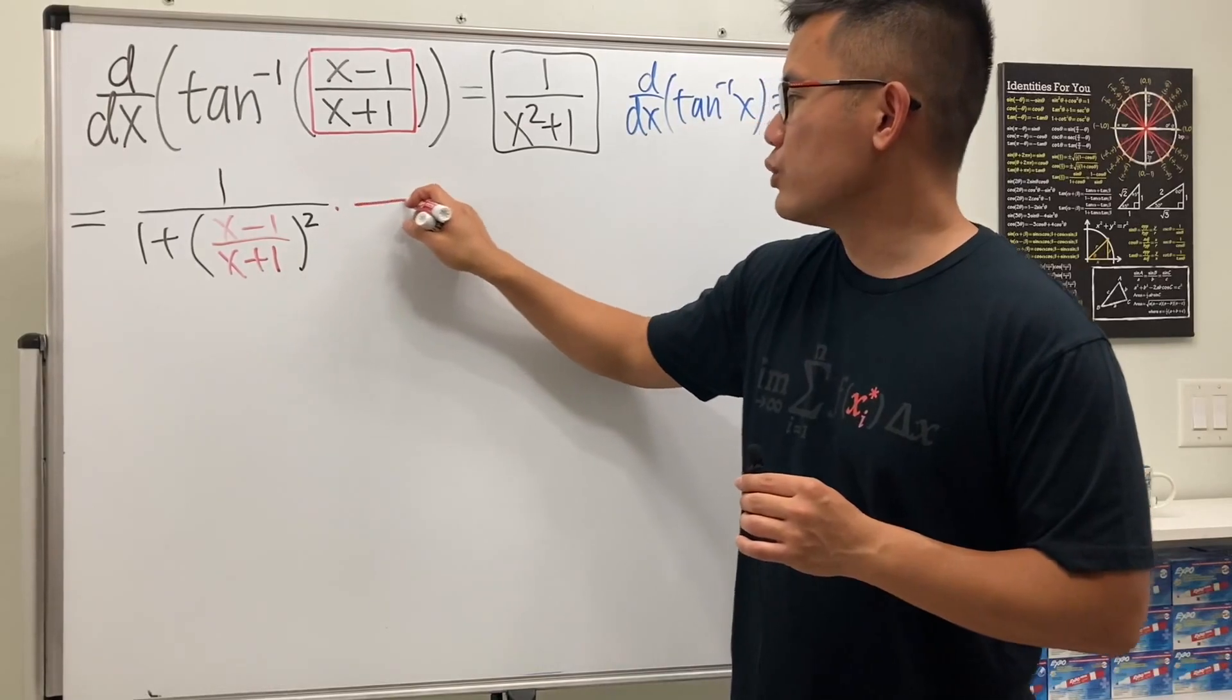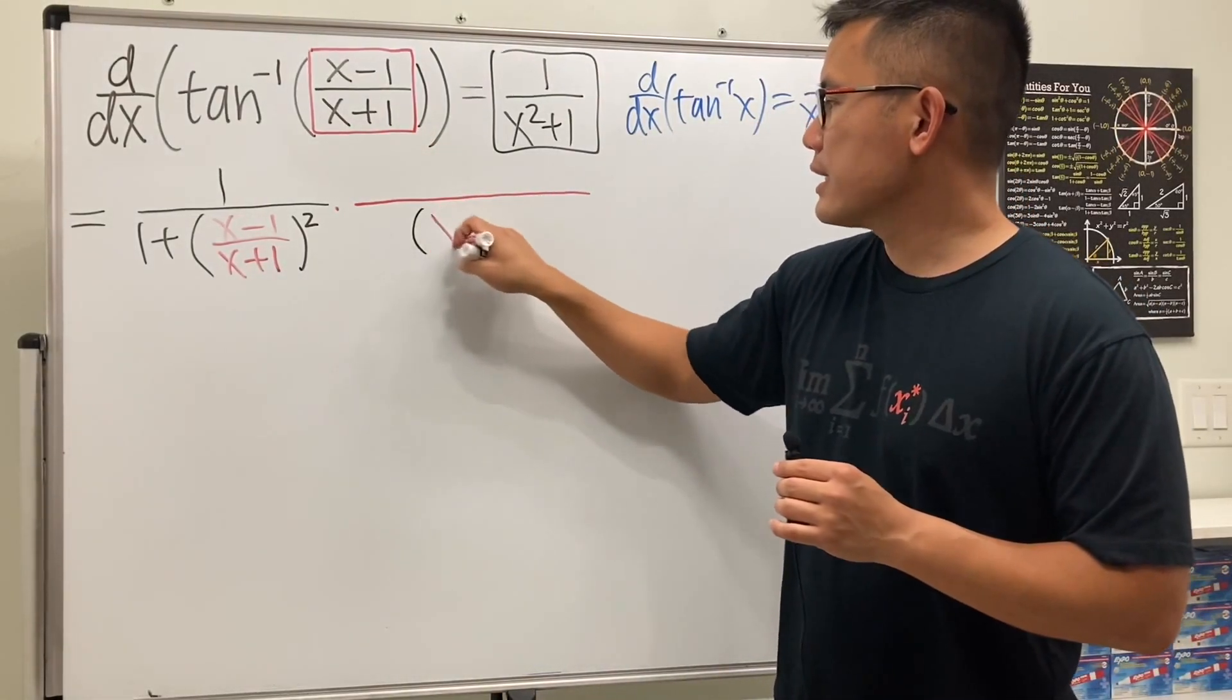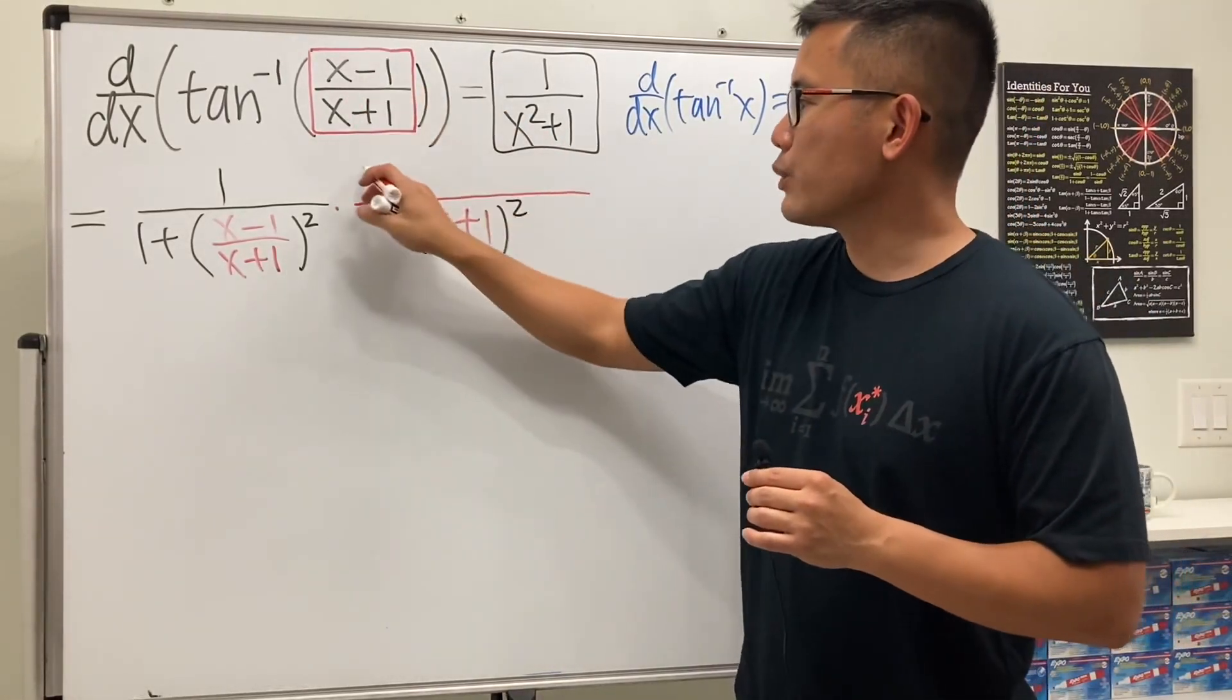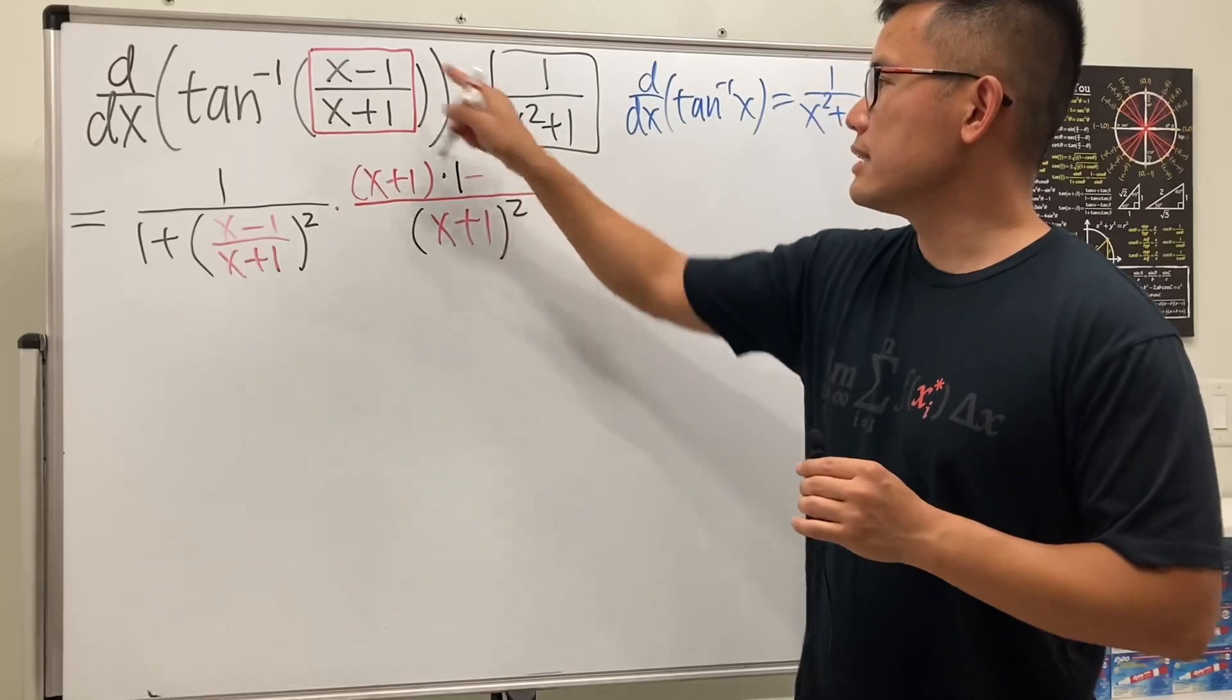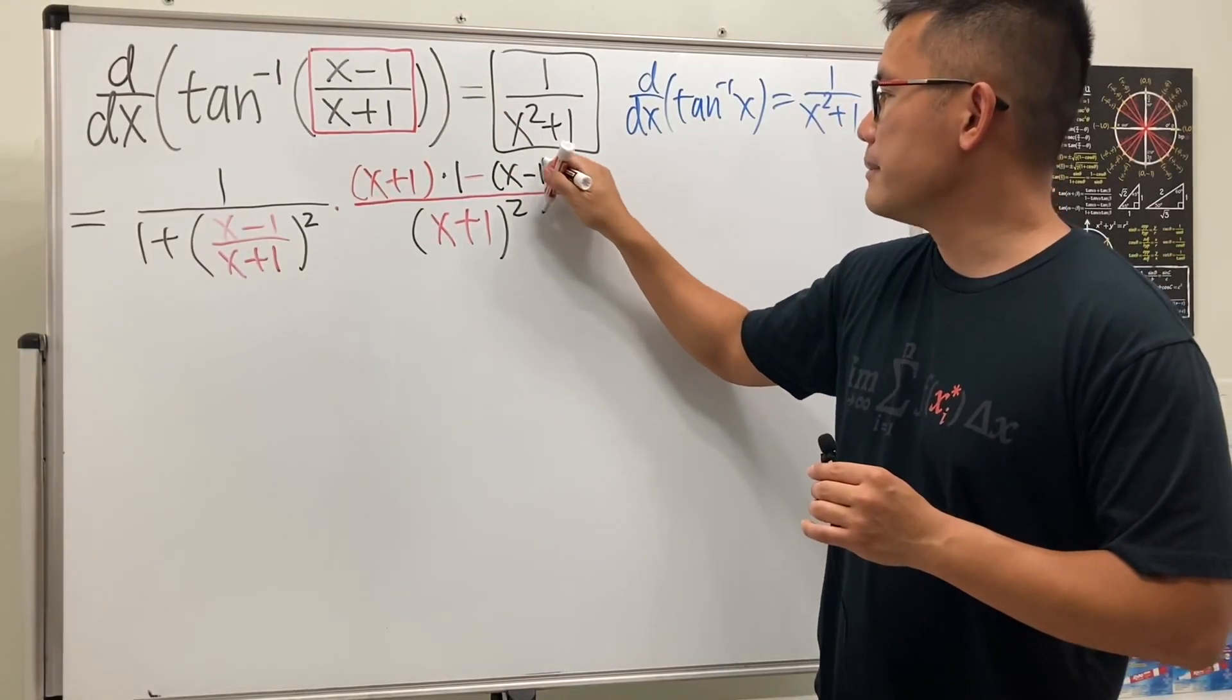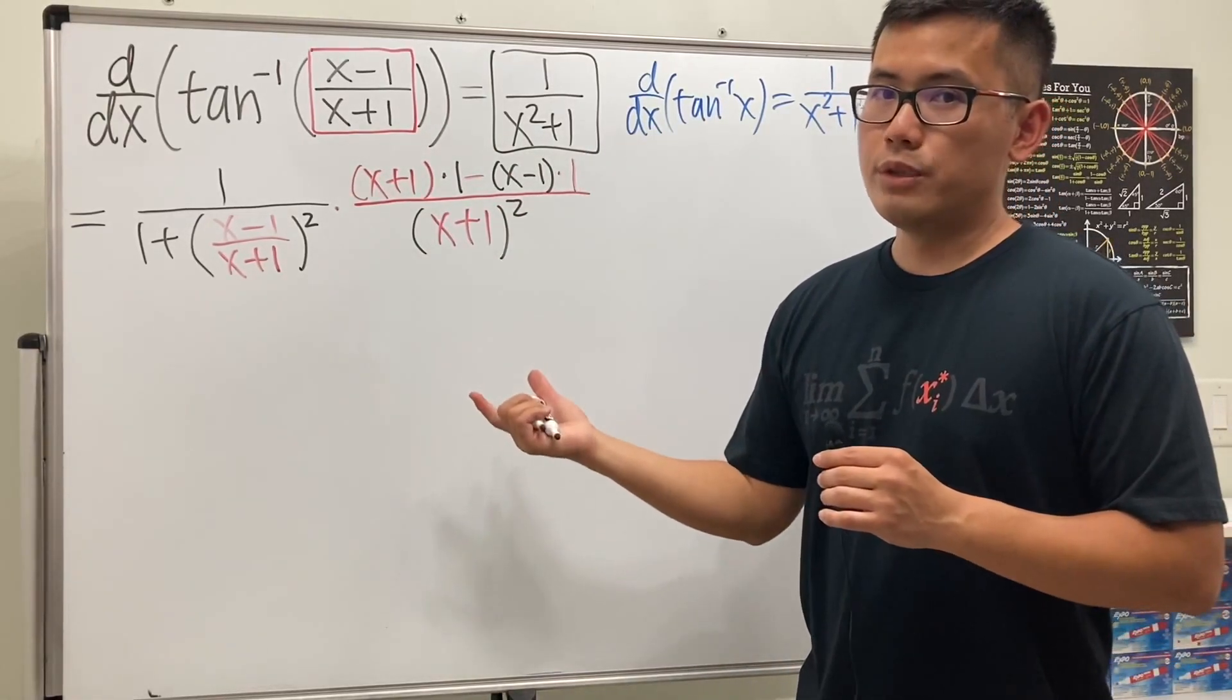So, use the quotient rule for that. Square the bottom, so we will have x plus 1, and then square, and then go ahead and put the bottom to the top, so we have x plus 1, times the derivative of the top, which is just 1, and then minus the top function, which is x minus 1, and then times the derivative of the bottom function, which is 1.